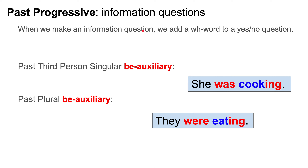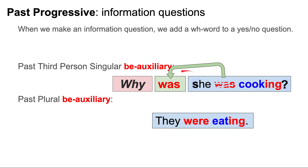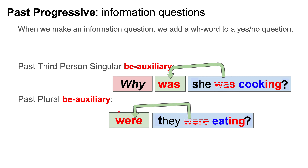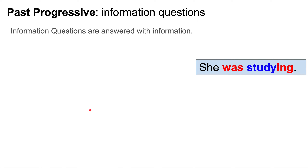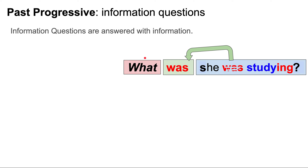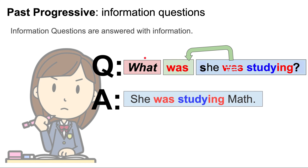When we make an information question, we add a WH word to a yes/no question. For example: statement — she was cooking; yes/no question — was she cooking?; WH question — why was she cooking? Another example: statement — they were eating; yes/no question — were they eating?; WH question — when were they eating? Information questions are answered with information. What was she studying? She was studying math.